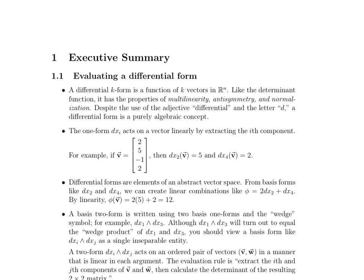Differential forms are elements of an abstract vector space. From basis forms like dx_2 and dx_4, you can create more complicated linear combinations. For instance, check out phi here. Phi is 2 times dx_2 plus dx_4. By linearity, you can compute this by individually computing what dx_2 and dx_4 would be on a particular vector. In this case, phi(v) would be 2 times 5 plus 2, which equals 12.